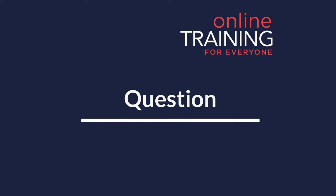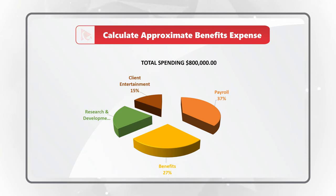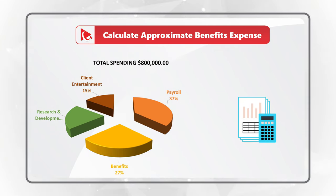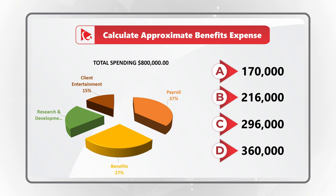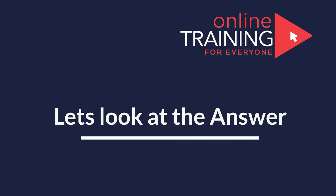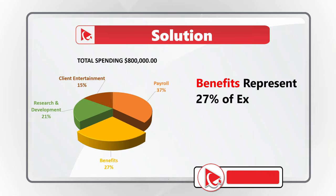Here is an amazing question with an unusual twist which tests your knowledge of pie charts. You are presented with total spending for an organization and you need to calculate the approximate benefits expense. In addition to benefits expense, you see payroll expense, research and development expense, as well as client entertainment. Your final selection is within one of four possible choices. Take a close look — maybe pause this video to do the mental math. Benefits represent 27% of all expenses.